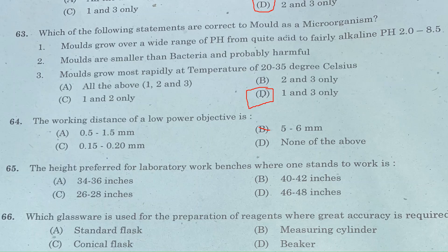Question 65: The height preferred for laboratory work benches where one stands to work is — Option A: 34 to 36 inches. Option B: 40 to 42 inches. Option C: 26 to 28 inches. Option D: 46 to 48 inches. Answer is Option A, 34 to 36 inches.